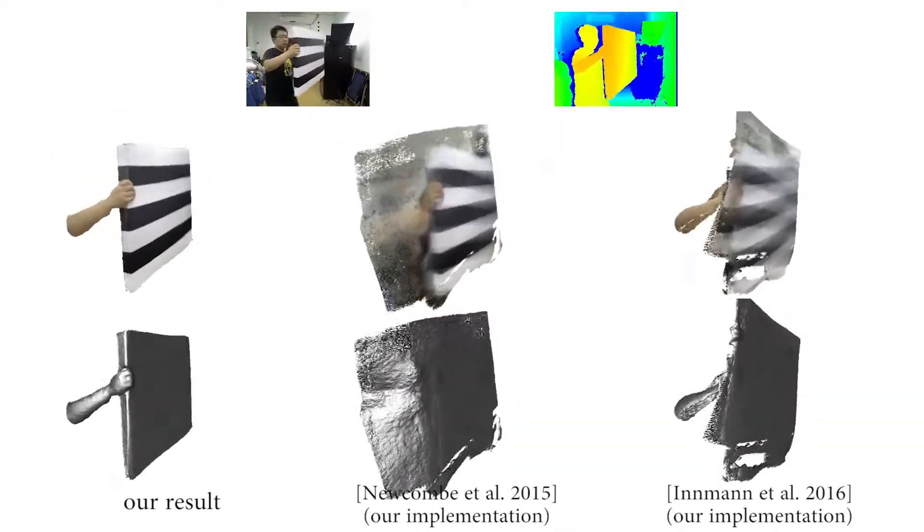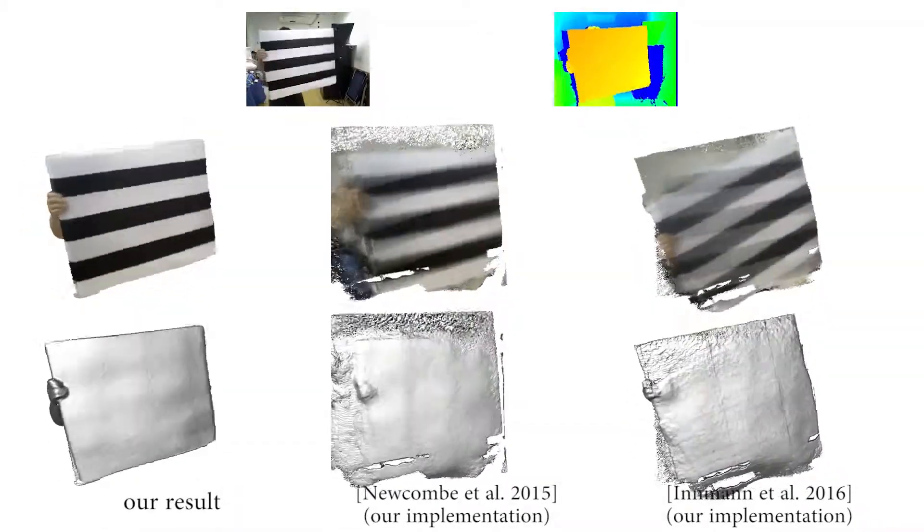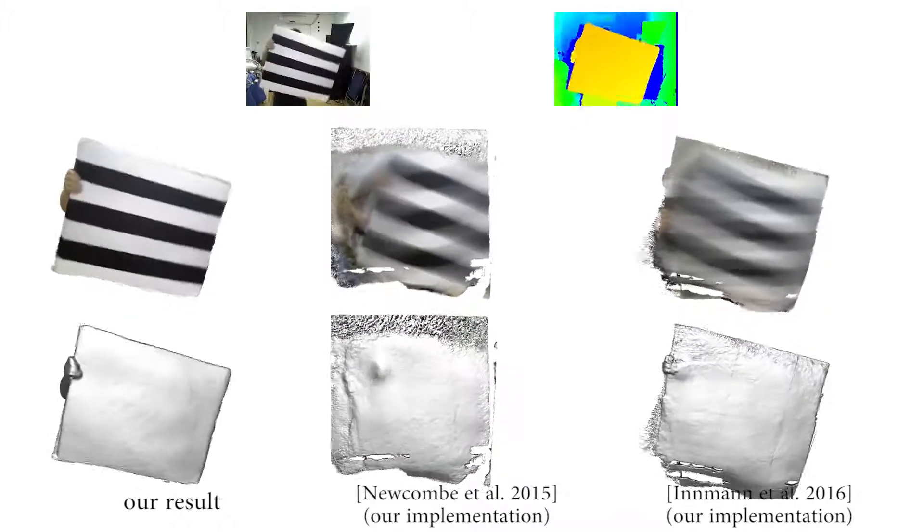Because the tangential motion has so few geometry and texture feature cues, Newcomb et al. and Inman et al. cannot track the motion correctly.